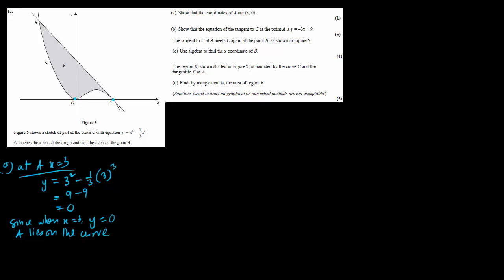The curve has the name capital C. Question B asks us to find the tangent. To find the equation of a line, we need a point — suppose the point is (x1, y1) — and we need to know the slope or gradient.